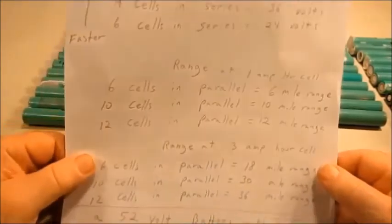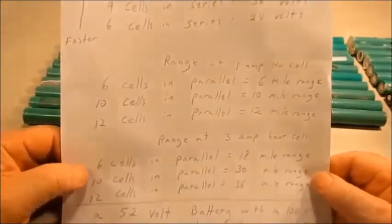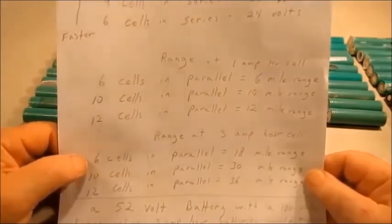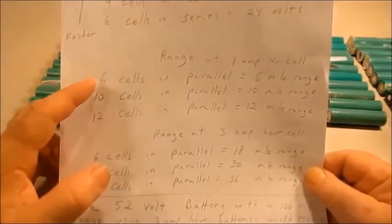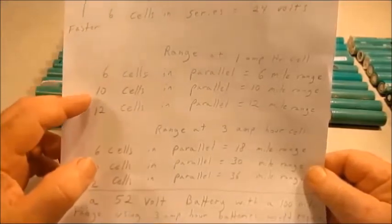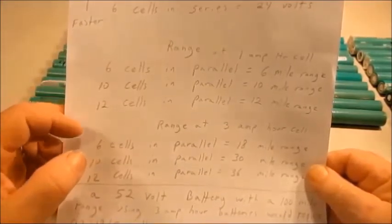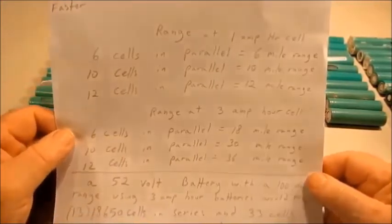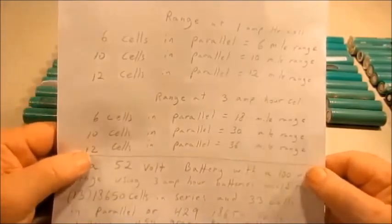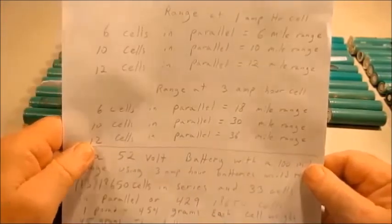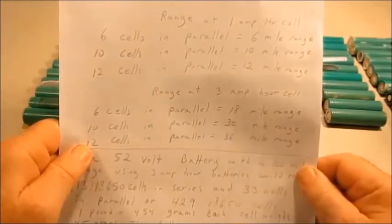If you look at the range, if you had one amp hour cells, if you put six cells in parallel you'd be able to go six miles, ten cells in parallel you go ten miles, twelve cells in parallel you go twelve miles.